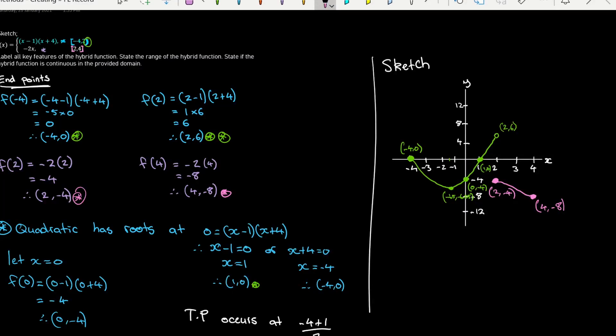So it's saying label all key features—we have done that. State the range of the function. Well, I'd say that the range goes all the way up to this y value of 6 and doesn't include it, and it goes all the way down to this y value of negative 8 and does include it. So I'd say that we go from including negative 8 all the way up to 6 with a round bracket there for the range.